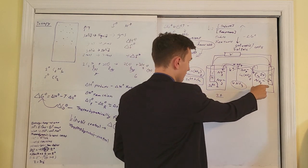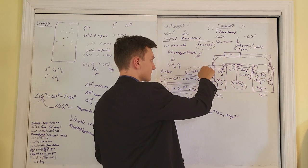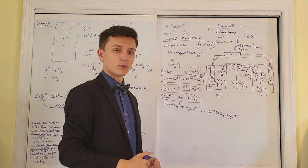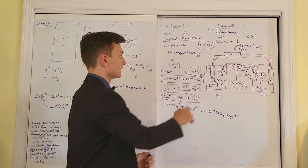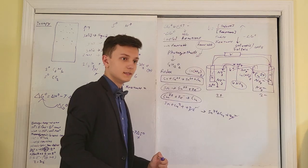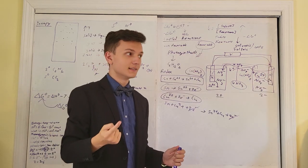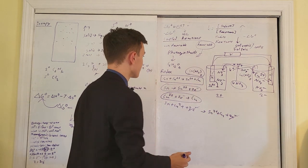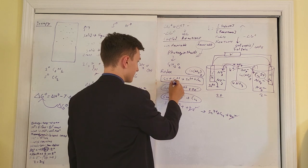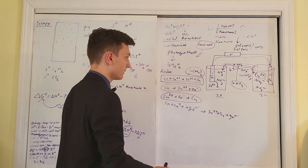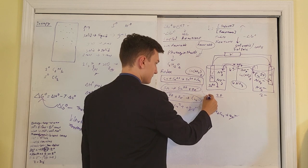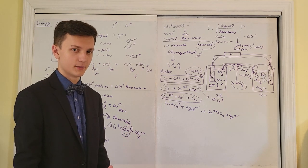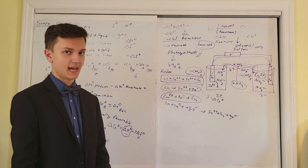The tin loses electrons, copper gains electrons, and the electrons flow through the wire from point A to point B. This is a battery — that is how a battery works. The whole reason this is happening is because the full reaction has a negative delta G. A negative delta G means it's thermodynamically favorable, it wants to happen, and it releases energy as it happens.